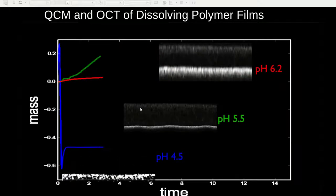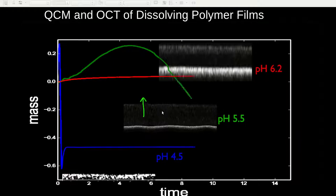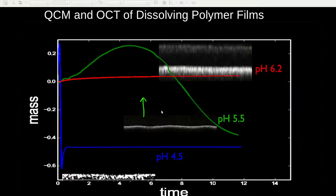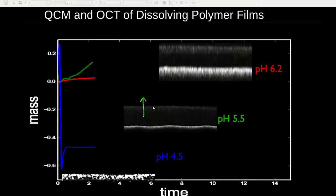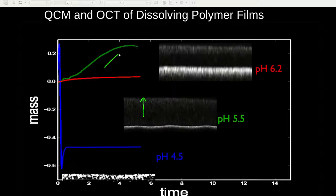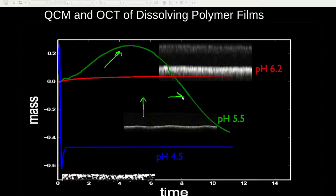As the pH is lowered to 5.5, there is an initial increase of the polymer film thickness as it swells followed by its dissolution. Again, QCM confirms this and shows an initial increase in the mass followed by a subsequent decrease in the mass as the polymer film dissolves.